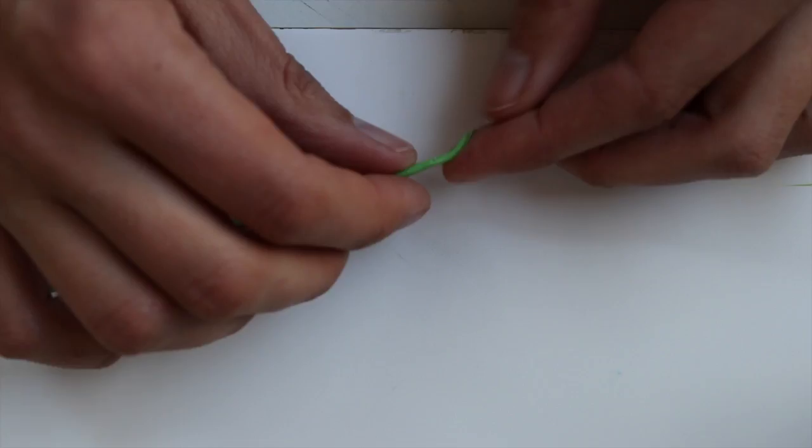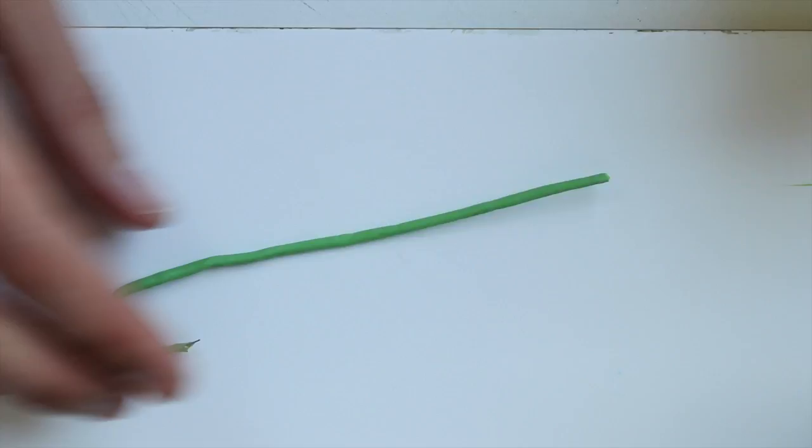Then smooth everything nicely and roll out. Remove the excess, give it a bend, readjust if necessary and make as many as you want.